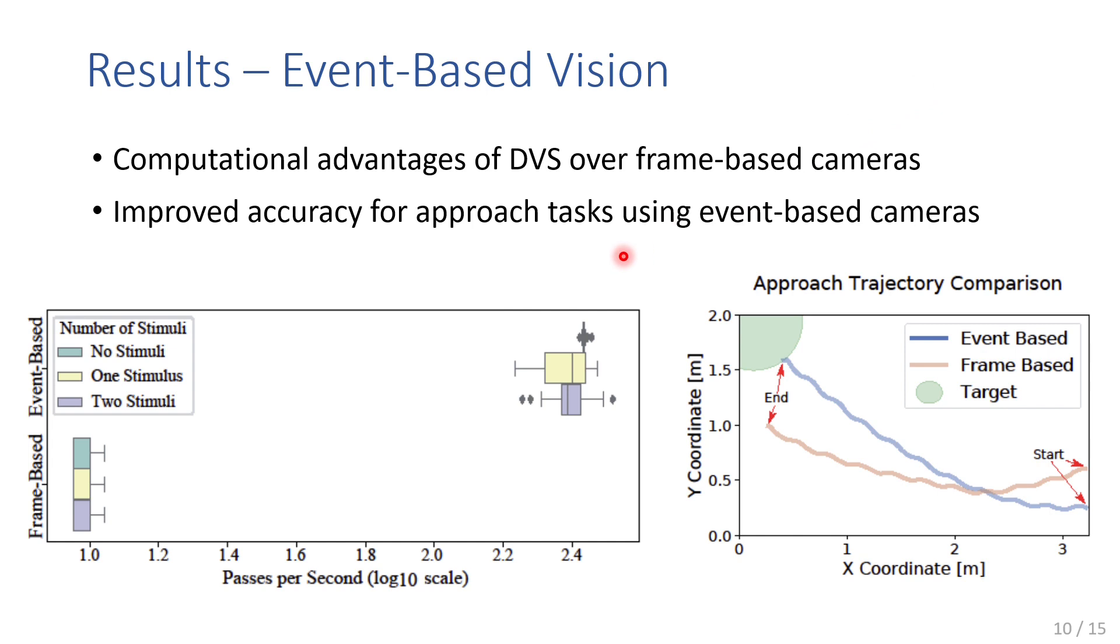We were not surprised to find that event-based cameras led to a significant increase in the number of passes per second through the neural network. For each sensor type, the Envirobot was exposed to no stimuli, a single stimulus, and two stimuli for 60 seconds each. Looking at the figure on the left, we can see that in general our system was able to complete 10 times more passes through the neural network per second when event-based cameras were used. Even more exciting was the observation that event-based cameras seemed to enable more accurate approach of target objects.